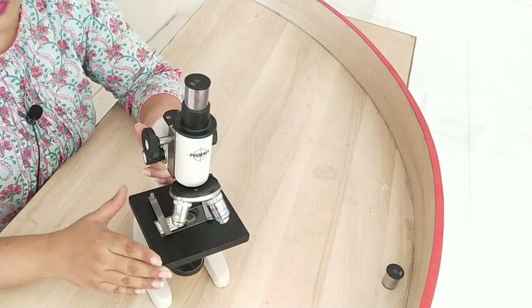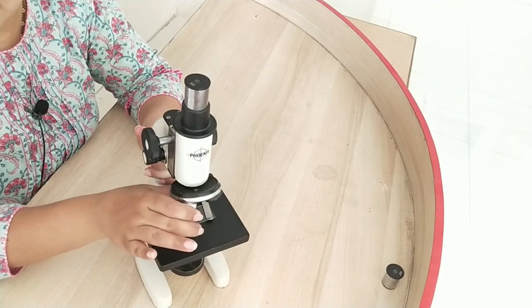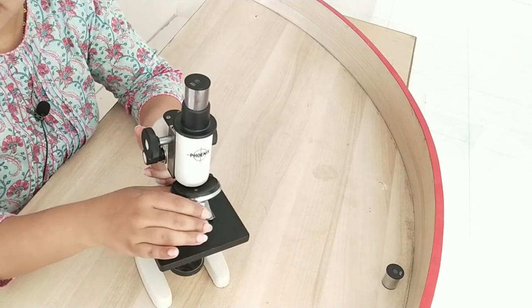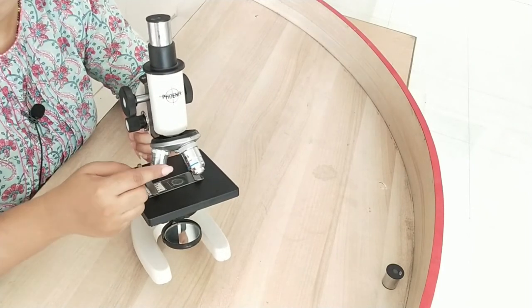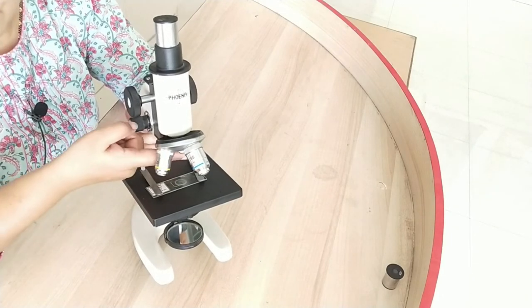Next we have nose piece. As you can see here it is a circular and rotating metal plate. It has three holes where we can place objective lenses. Two are already here and one is left empty.